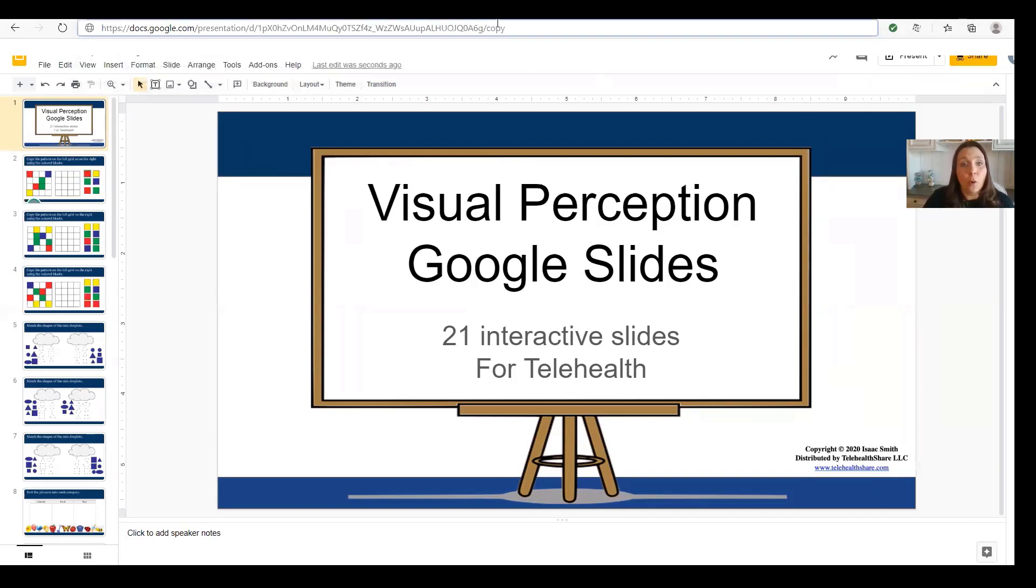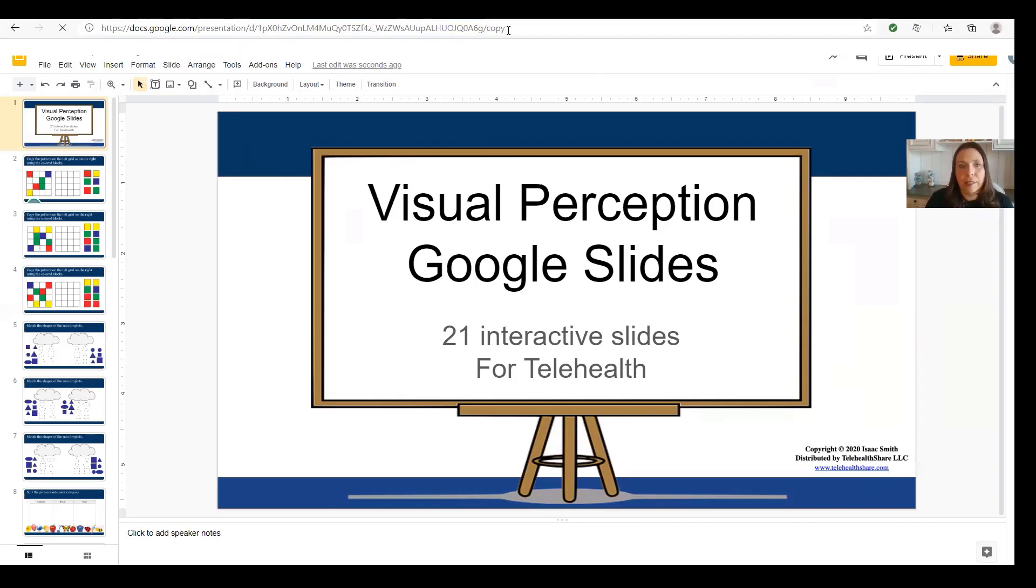And then you'll have them open essentially a copy of that. When they open a copy of it, it will not change the master. So if we click that and you ask the student to click the hyperlink that you just pasted into the chat pod, this will prompt, this will come up to prompt them to click make a copy.